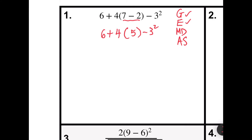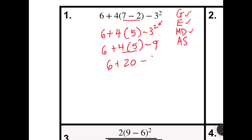Next is exponents. I do have an exponent on the 3, and I know that 3 squared is 9. Next, multiply or divide from left to right. I have 4 times 5, so I will have 6 plus 20 minus 9. And then last but not least, add and subtract from left to right as you see them. So 6 plus 20 is 26, and 26 minus 9 is 17.